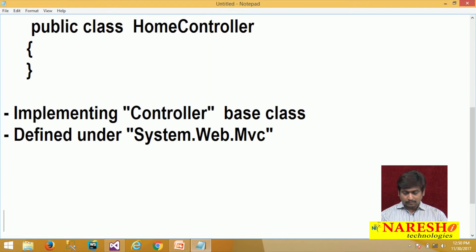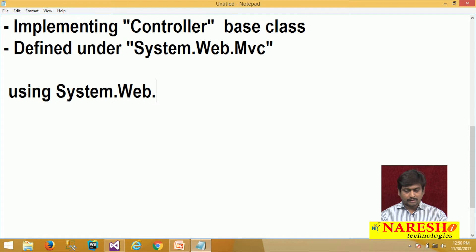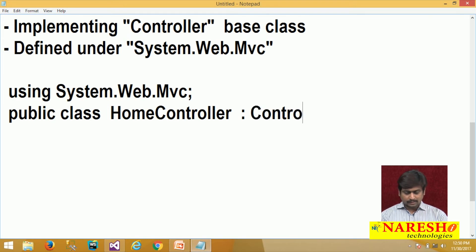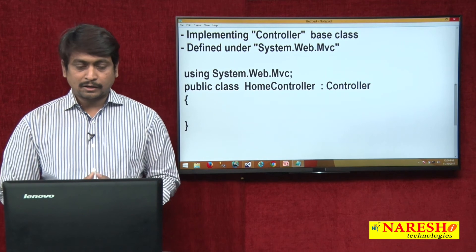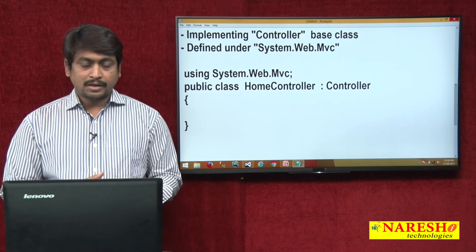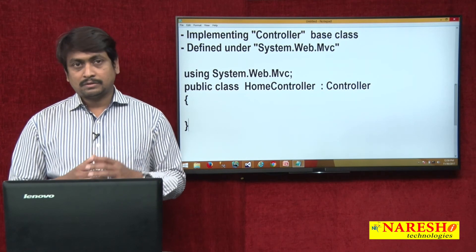The controller base class is defined under System.Web.Mvc. A C# class will start behaving as a controller class only after implementing the controller base class. To acquire the features of a controller, every controller class must inherit that controller base class. So we import the namespace System.Web.Mvc, create a class — for example 'HomeController' — and have it inherit the controller base class. Now this is your professionally configured controller.